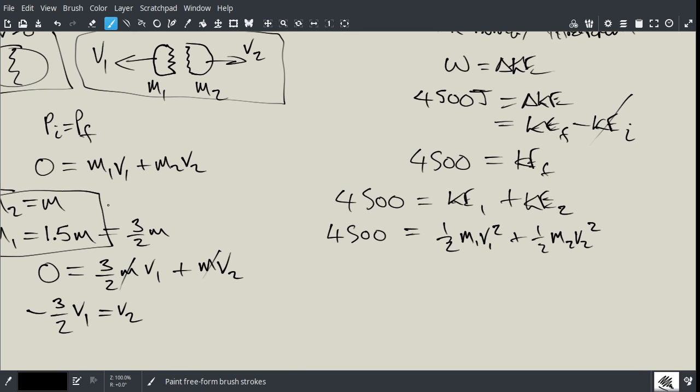So 4,500 is equal to one-half, and now this one is M1 V1 squared plus one-half M2 V2 squared. Now, once again, I can apply my substitution for the masses because the masses are related. So I'm going to apply this over here again. So I'm going to go 4,500 is equal to one-half. Now, for M1, I'm going to put 3 over 2 M V1 squared plus one-half M V2 squared. And I can rewrite this one last time again, combining the fraction in front here, which is going to be 3 over 4 M V1 squared plus one-half M V2 squared.